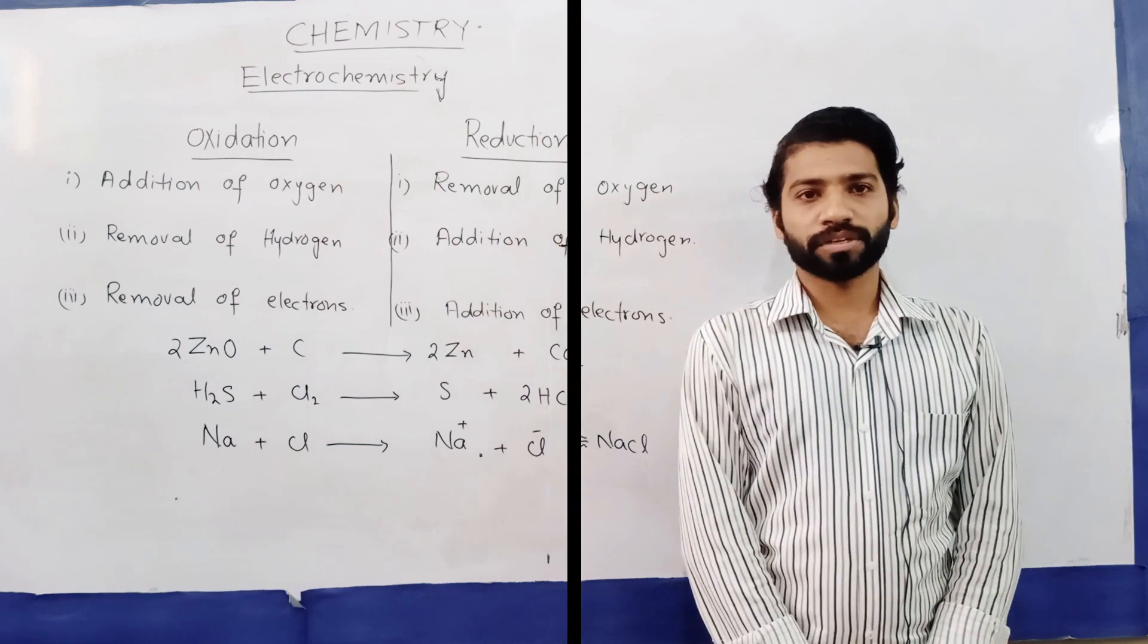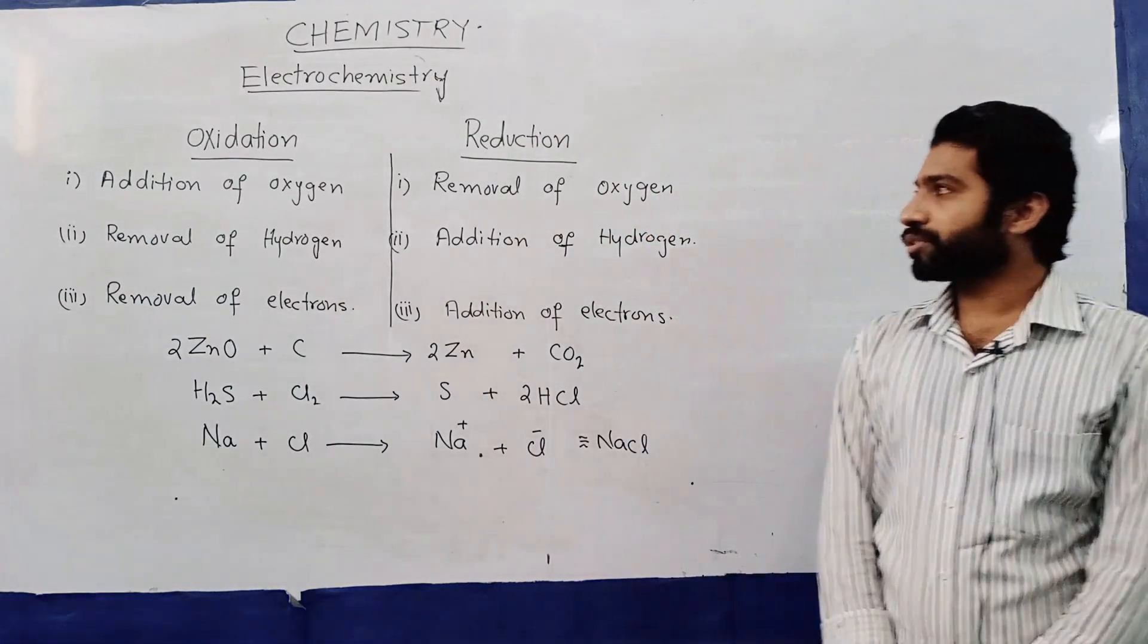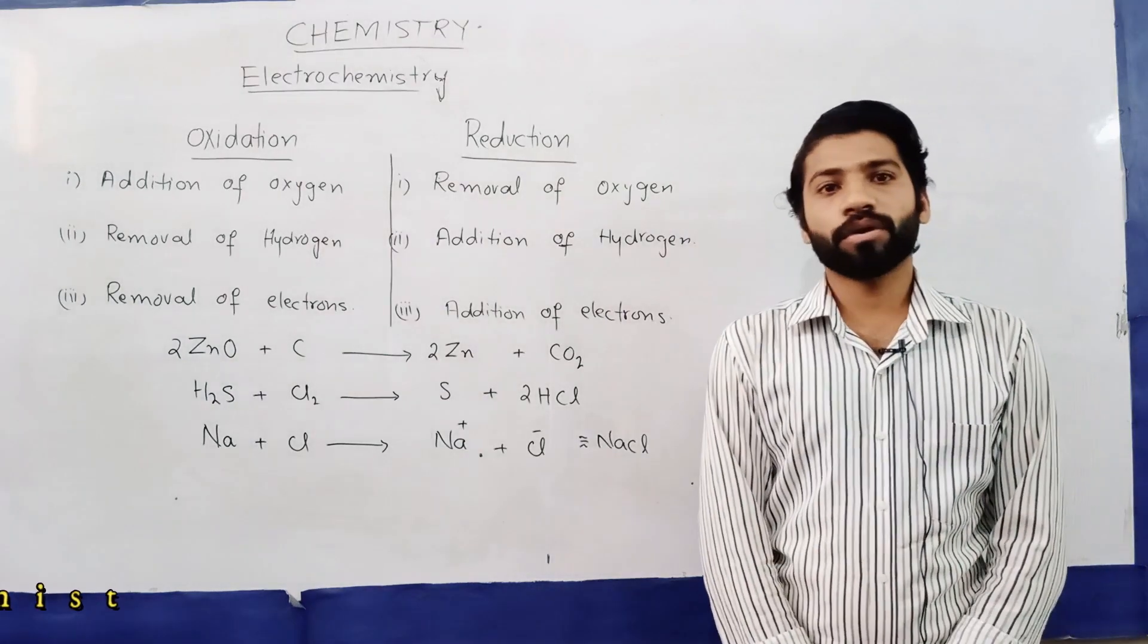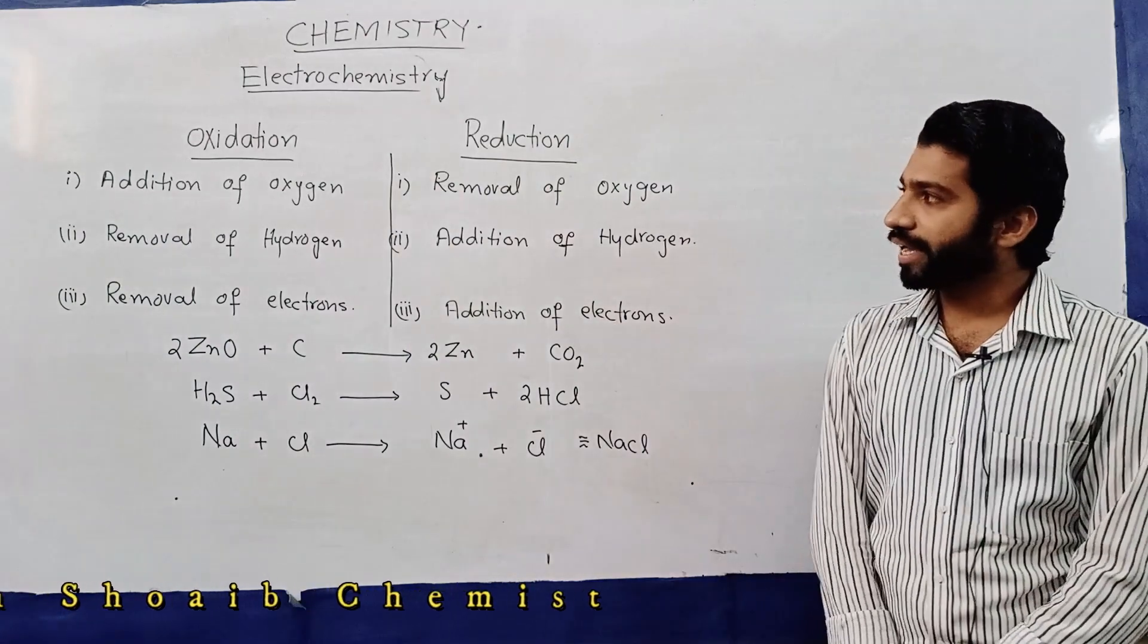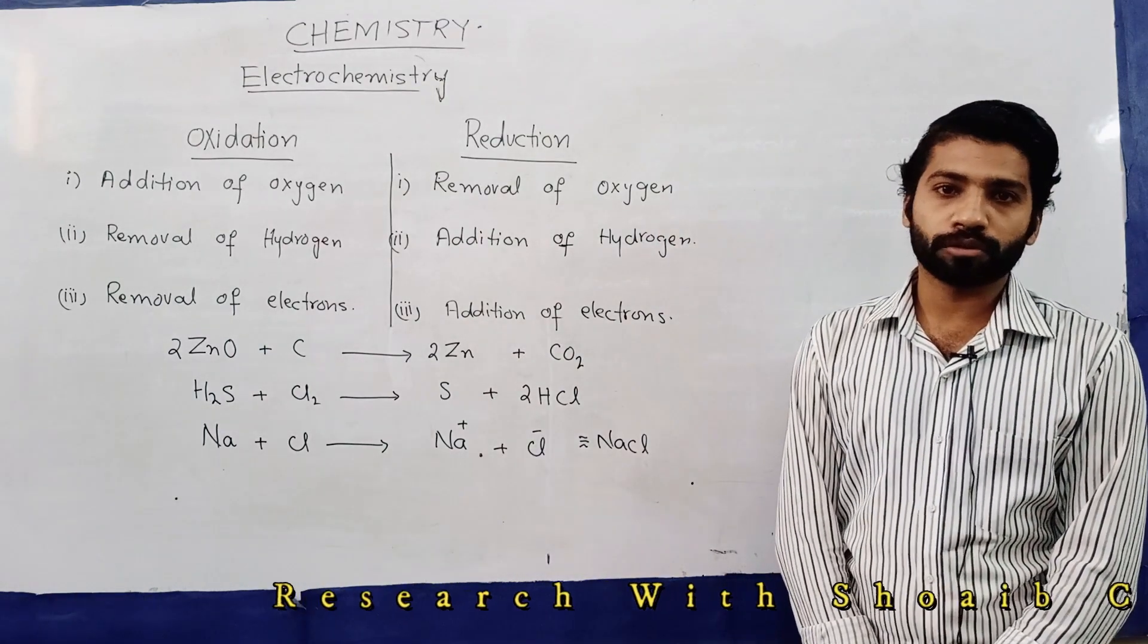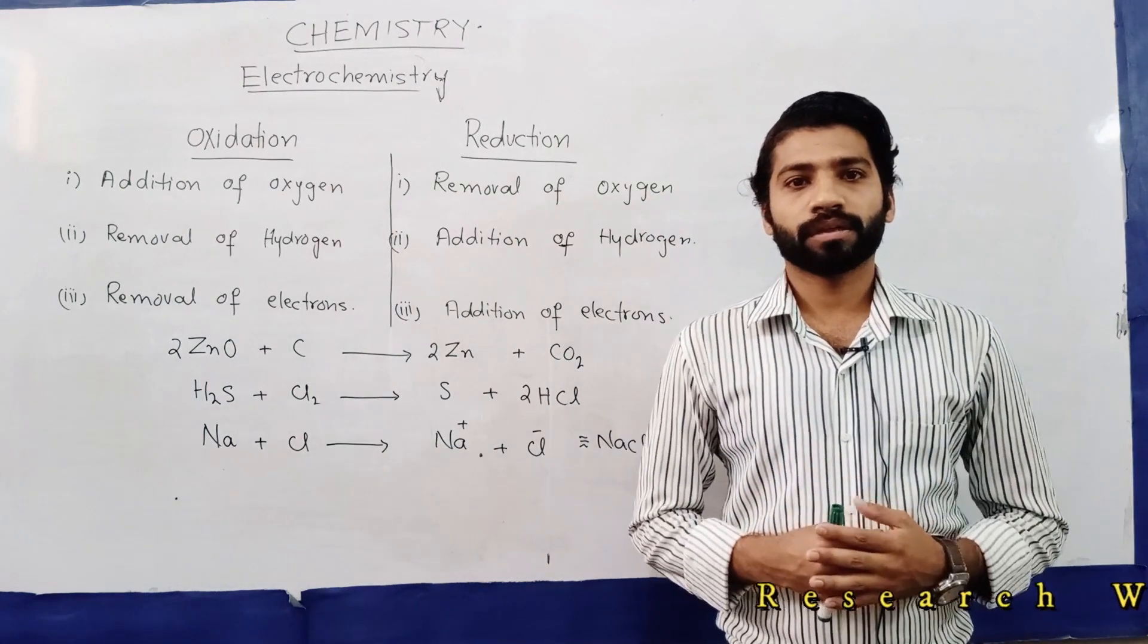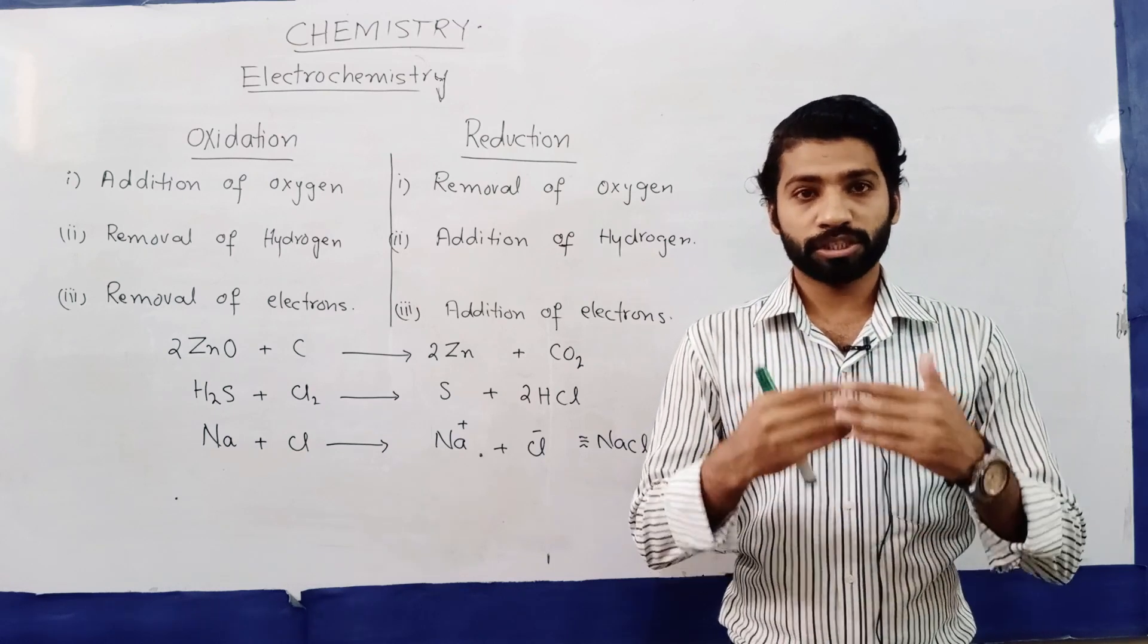Today we are going to start what is oxidation and what is reduction. Oxidation is defined as addition of oxygen to a substance, and reduction is defined as removal of oxygen from a substance. In a chemical reaction, when oxygen is added to a substance or atom, we call it oxidation, and when oxygen is removed, we call it reduction.